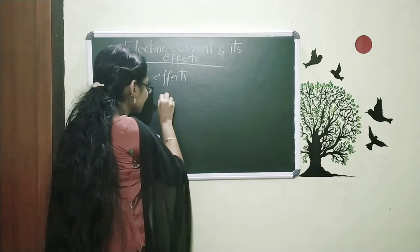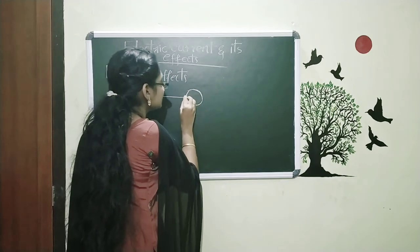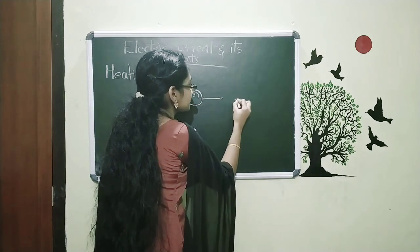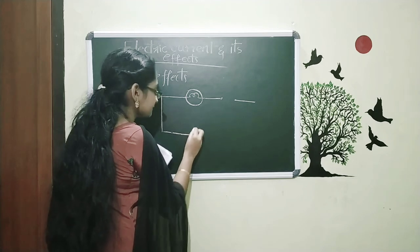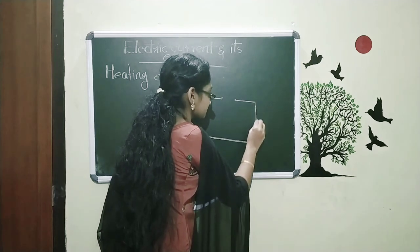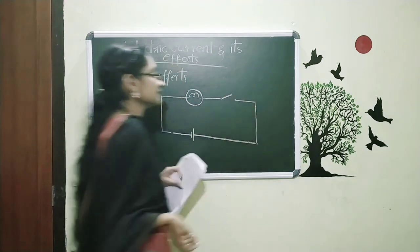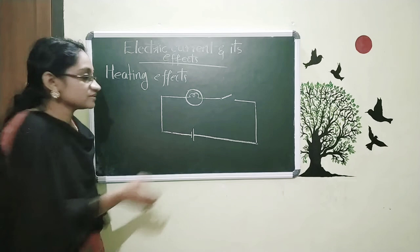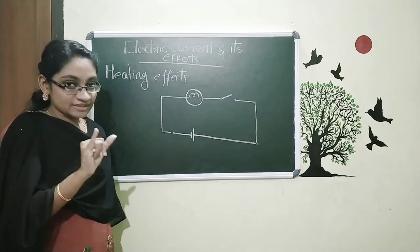Now we can start with an activity. Here I am connecting a bulb, and there connecting a switch. I am giving here a cell. First of all, this key is open. So this is the circuit. Please touch and check the bulb — is it hot or not?